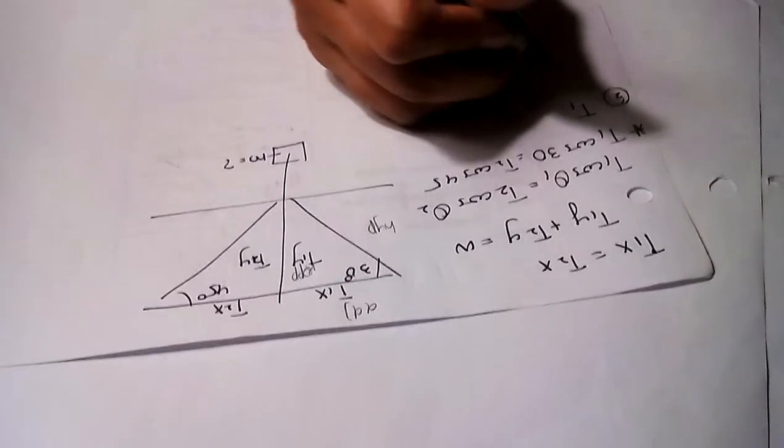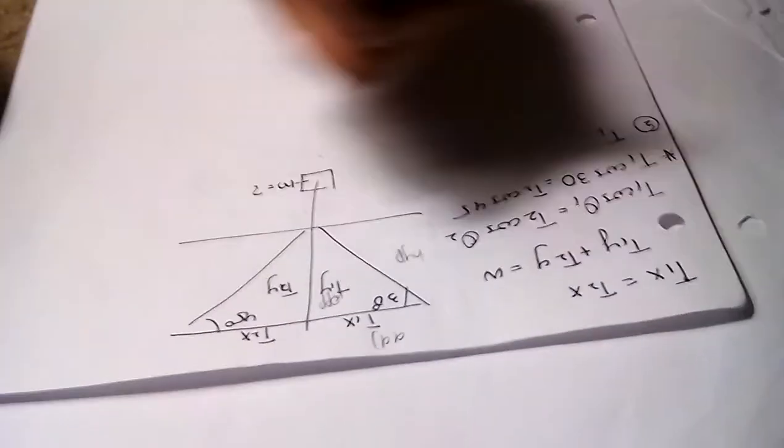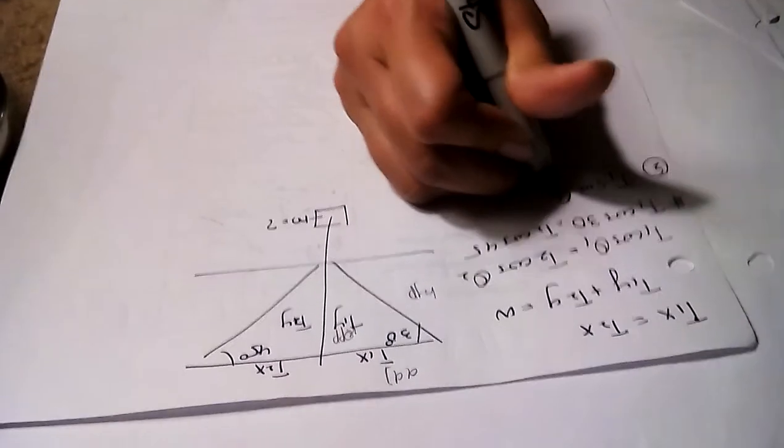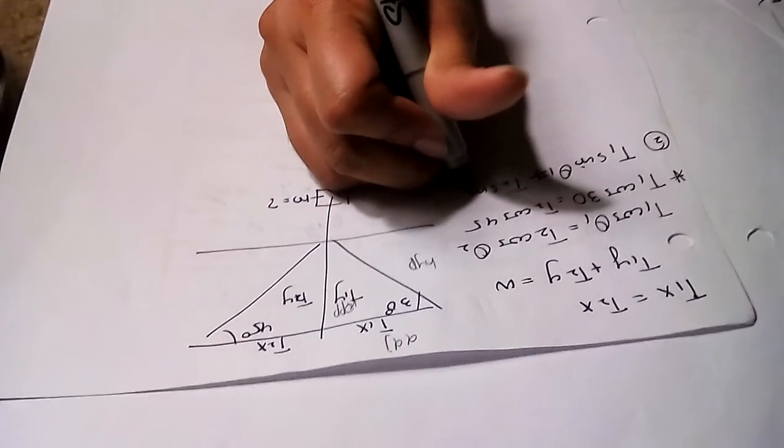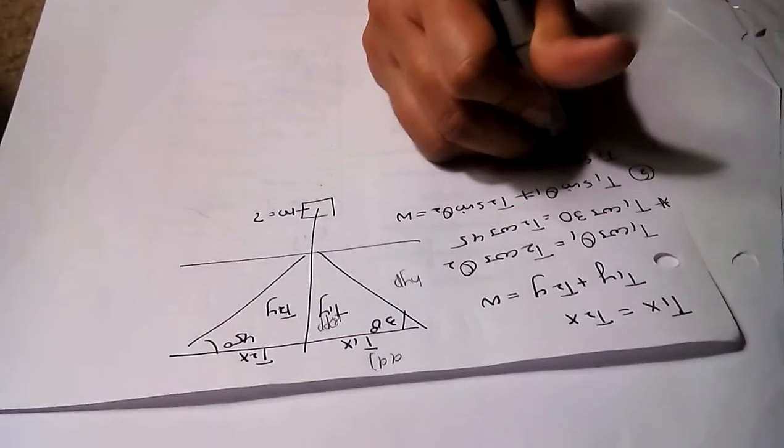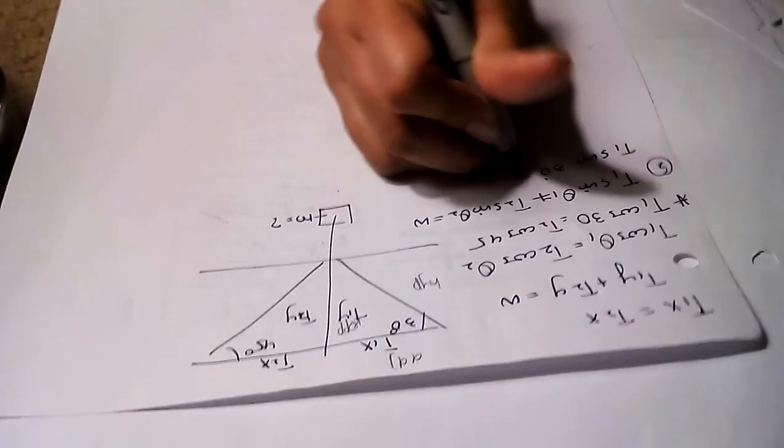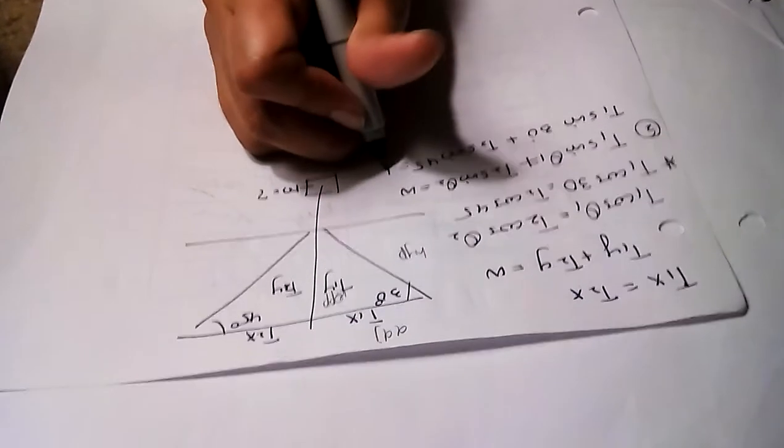For your second equation, if you want to plug in the angles, if one is cos, the other should be sin theta. t1 sin theta 1 plus t2 sin theta 2 equals w. t1 sin 30 degrees plus t2 sin of 45 equals w.